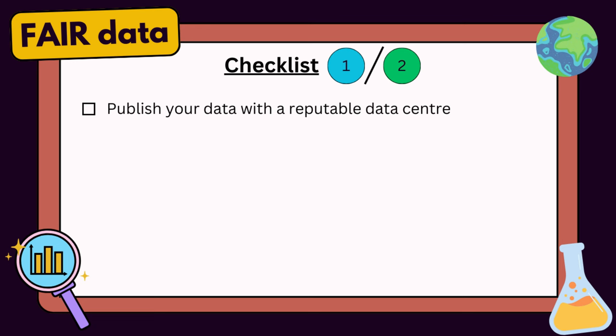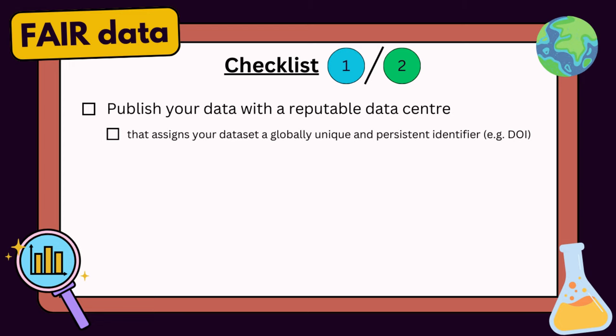So let's add a key criterion to the first item on our checklist: publish your data with a reputable data center that assigns your dataset a globally unique and persistent identifier, typically a DOI. You don't need to create the DOI yourself — most good data centers do this for you. But I've seen examples where data centers are not providing individual datasets with a DOI, so just be a little bit mindful of this.